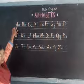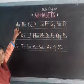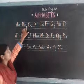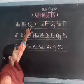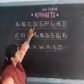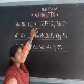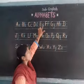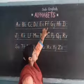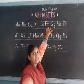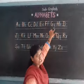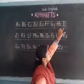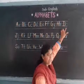This is capital A, this is small a. This is capital B, this is small b. This is capital C, this is small c. This is capital D, this is small d. This is capital E, this is small e. This is capital F, this is small f. This is capital G, this is small g. This is capital H, this is small h. This is capital I, this is small i.